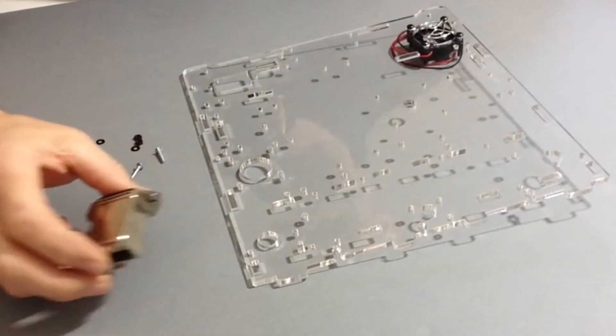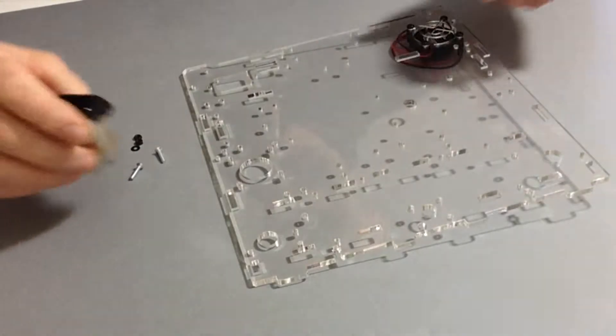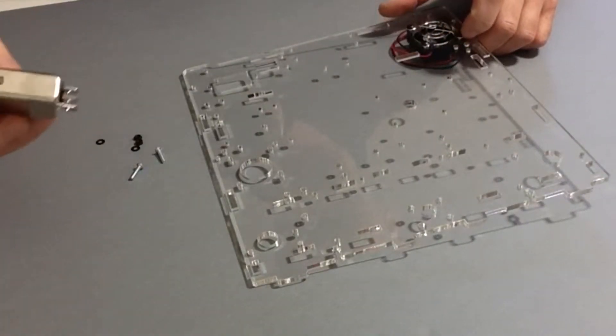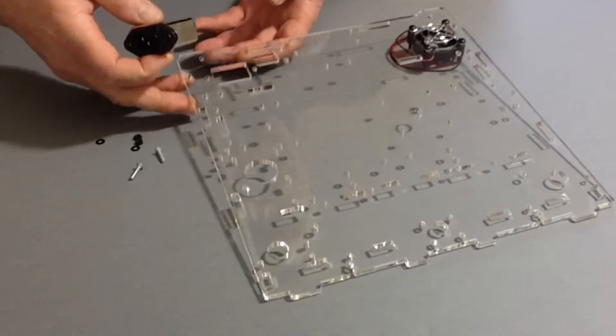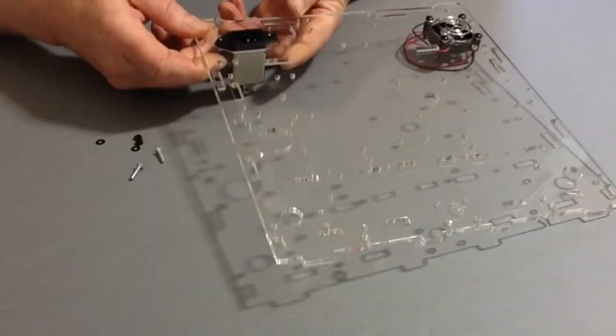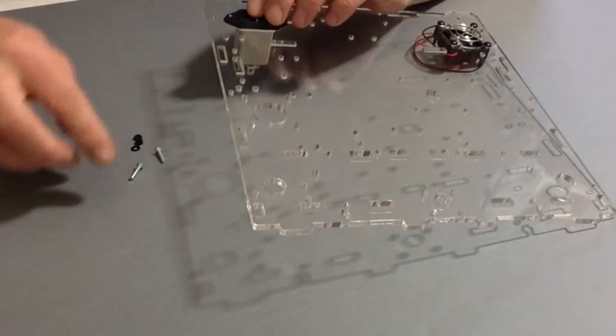In stage 6, we are fitting the noise filter. Take the noise filter and the accompanying screws, M3 nuts, and washers. Lift up the back plate from the previous stage, take the noise filter, and place it through the hole.